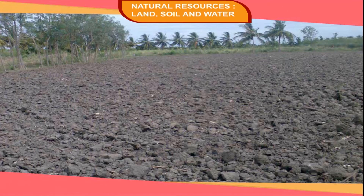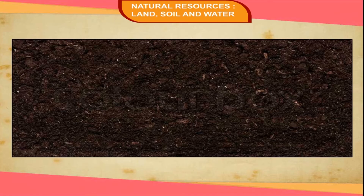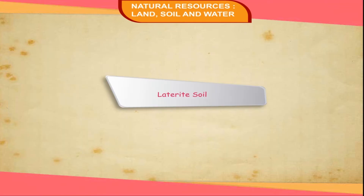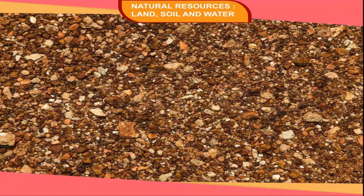Black soil is found on the Deccan Plateau, covering large parts of Maharashtra, Gujarat, and Madhya Pradesh. It is black in color and is most suitable for agriculture. Trivia: the formation of soil is a lengthy process — it takes about 500 years to form a layer of soil of about one inch thickness.